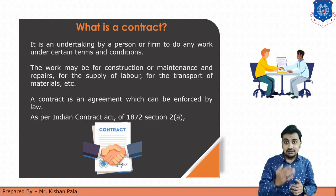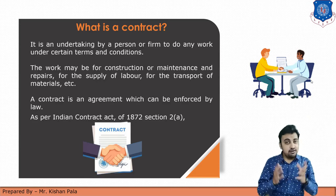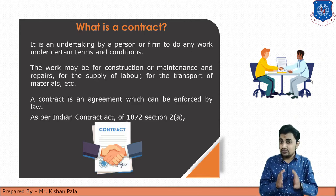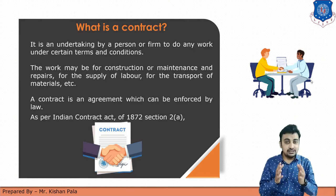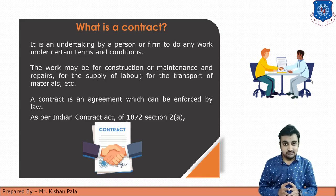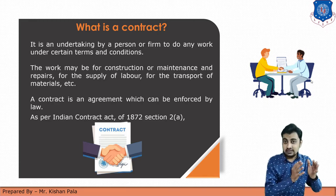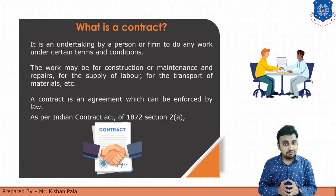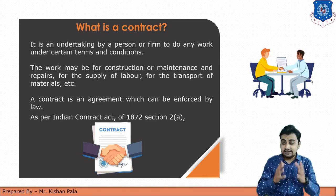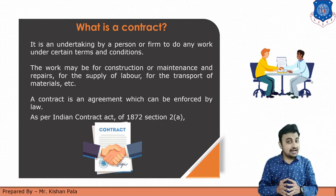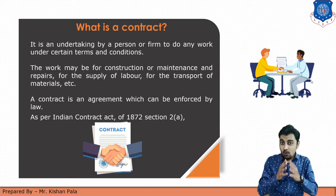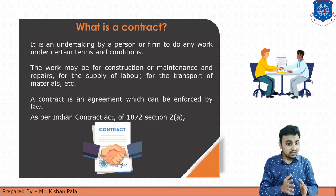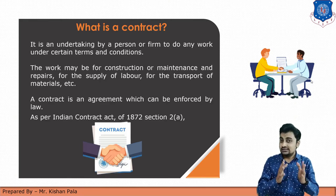A contract is an agreement which can be enforced by law. Without legal enforcement, it is not a valid contract or agreement. For example, if person A offers person B to kill person C, that would be an illegal contract — that is not a contract. Similarly, if person A wants to sell the Taj Mahal, that would be illegal and would not constitute a contract. So a valid contract must be enforced by law. The contract is defined in the Indian Contract Act of 1872, Section 2A. There are many sections in the Indian Contract Act, which is the main source of rules and regulations for contract work.